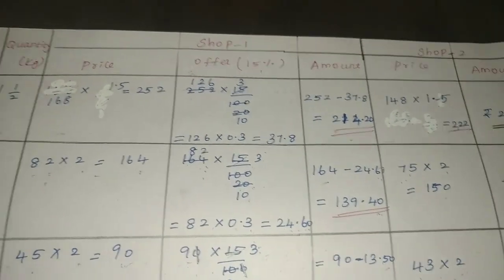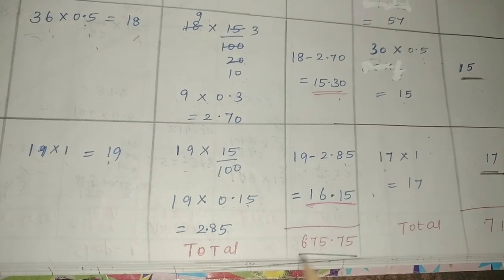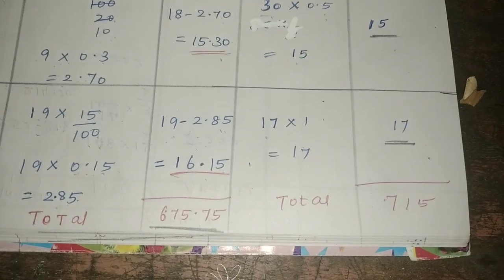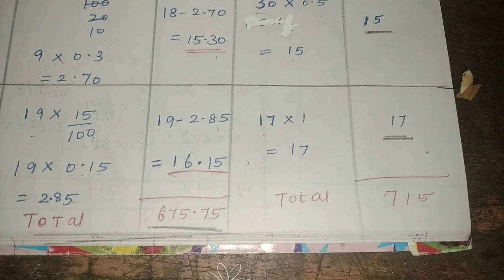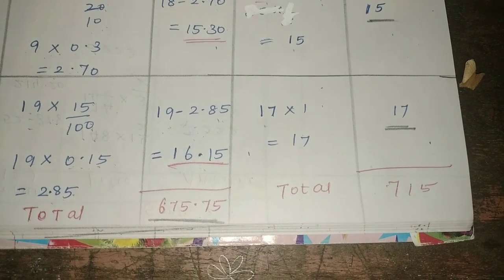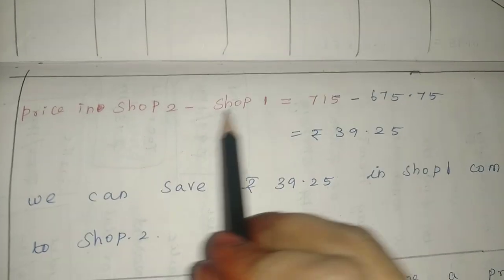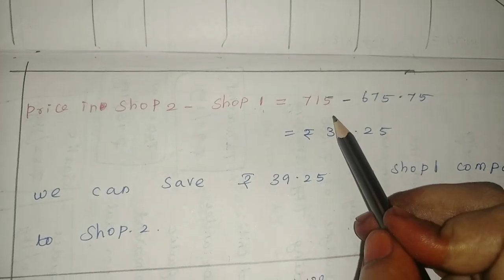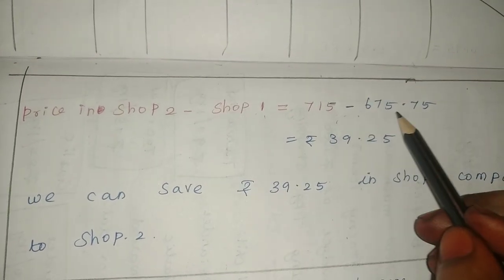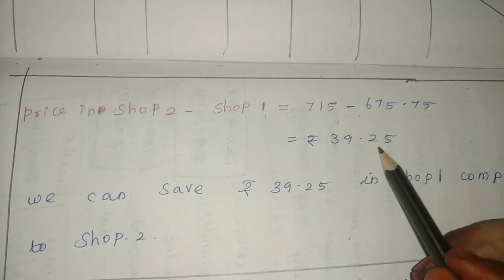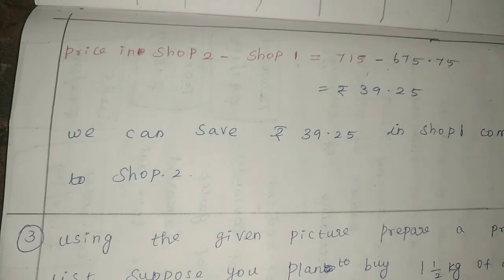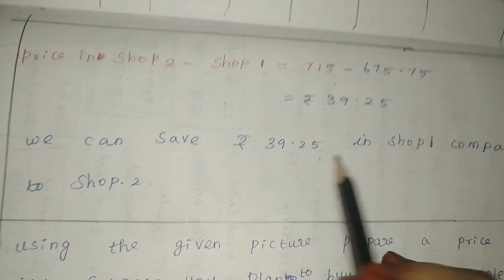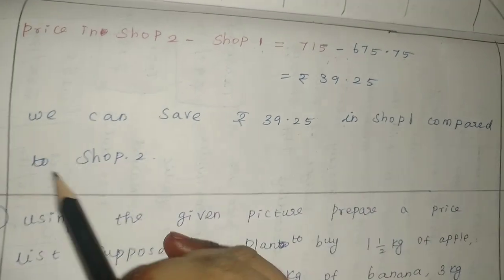Now for shop 1 total amount: ₹675.75. Shop 2 total value is ₹715. The difference: shop 2 price minus shop 1 price, so 715 minus 675.75 equals ₹39.25. We can save ₹39.25 by buying from shop 1 compared to shop 2.